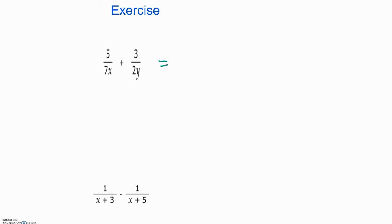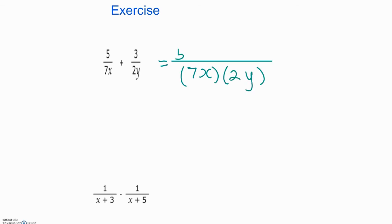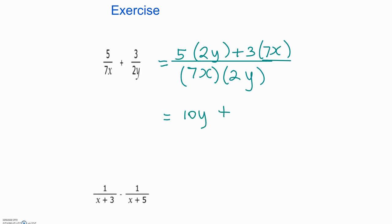Hopefully you've finished your working out and we're going to work through this together. Multiply both denominators: 7x times 2y. Cross multiplying: 2y times 5 gives you 5 times 2y, plus 3 times 7x. Expanding and simplifying: 5 times 2y gives you 10y, plus 3 times 7x is 21x. Multiplying the denominators: 7 times 2 gives you 14, so the denominator is 14xy.